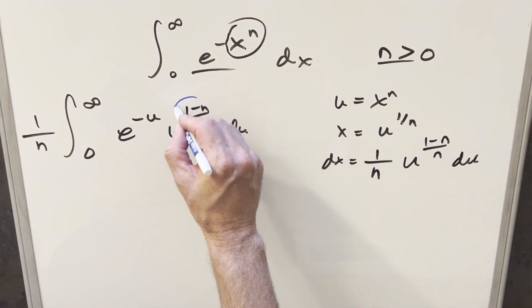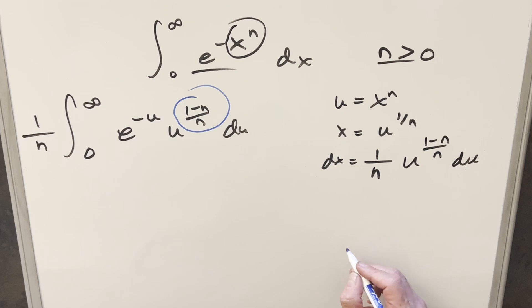Now what I want to do is rewrite this value. If I take (1-n)/n and divide by n, this becomes 1/n minus 1. Let's write it this way.